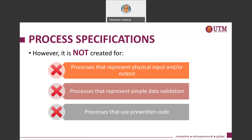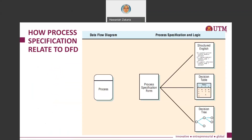A primitive process that uses pre-written code — where it's just a matter of calling the pre-written code — does not need a process specification. The diagram shows the relation between process specification and Structured English. On your data flow diagram, you have a process symbol, and assuming that is a primitive process, you then produce a process specification for it.